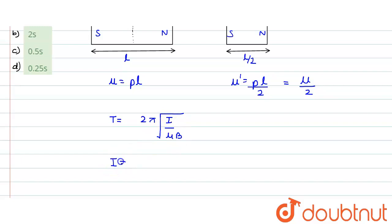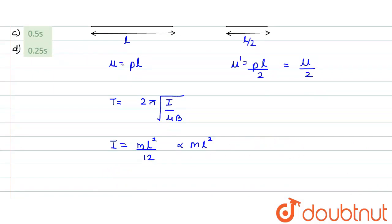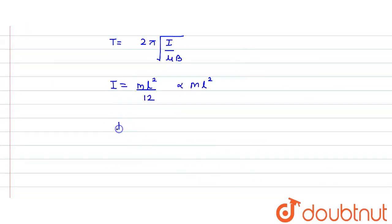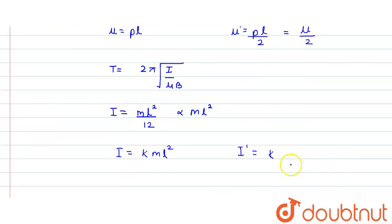The moment of inertia when fixed at the center is I = mL²/12, so I is proportional to mL². We can write I = k·mL² for some constant k. On cutting into two equal parts, mass becomes m/2 and length becomes L/2. So the new moment of inertia I' = k·(m/2)·(L/2)² = k·mL²/8.